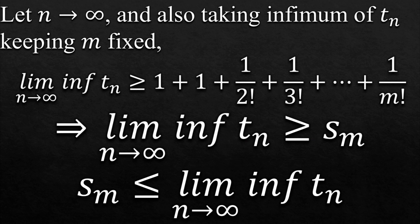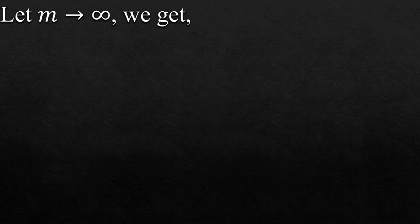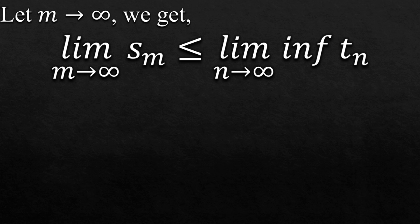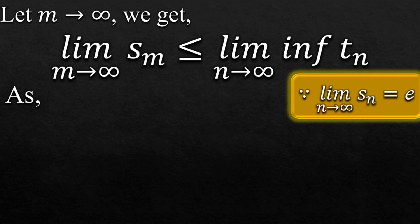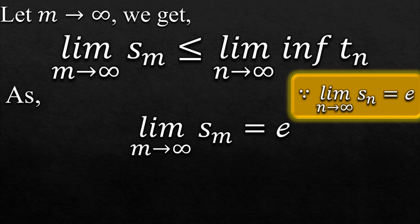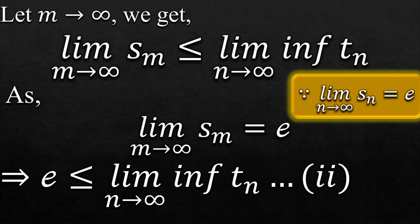And we got this inequality: Sm is less than or equal to lim inf Tn. Now let's apply the limit at Sm to infinity to get this inequality: lim Sm is less than or equal to lim inf Tn. Remember that thing we kept in a gold bar? Yeah, this one right here. Limit n approaches infinity Sn equals e. So we can deduct that lim Sm is also equal to e, because after applying limit tends to infinity both Sn and Sm become equal. So this implies that e is less than or equal to lim inf Tn. And we call it equation number 2.